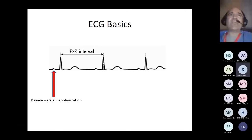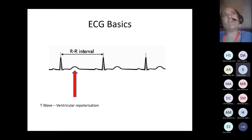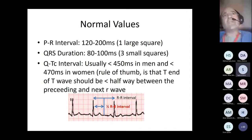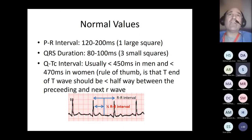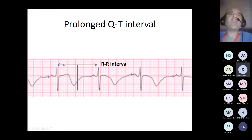In contemporary practice: P-wave for atrial depolarisation, QRS for ventricular depolarisation, T-wave for ventricular repolarisation. Key intervals: PR interval should be up to about 180–200 milliseconds. QRS should be narrow, less than three small squares. QTc should be less than 450 ms in men and less than 470 ms in women. A useful rule of thumb for QT: look at the RR interval and drop a line halfway down — the T-wave should end before that line. If the T-wave extends beyond that line, the QT is prolonged.